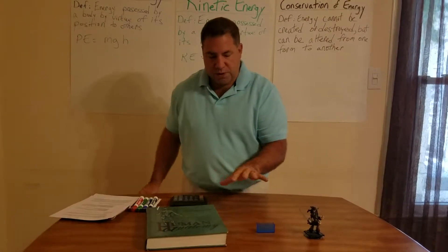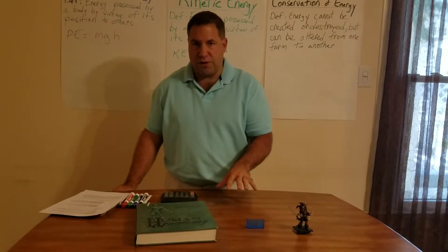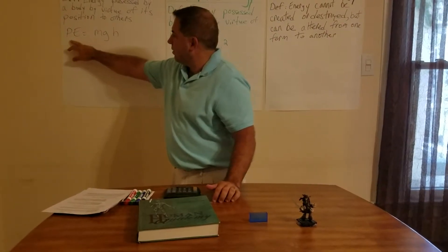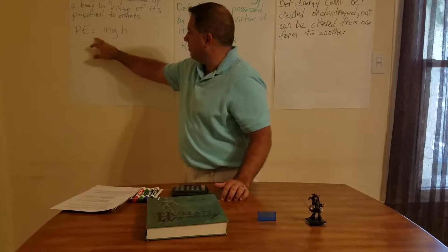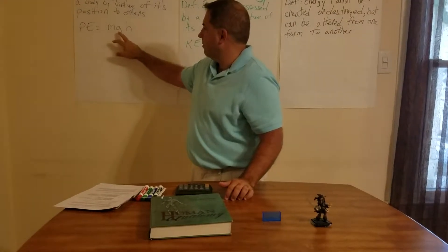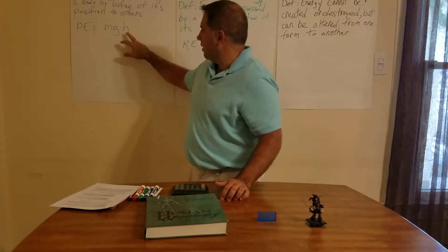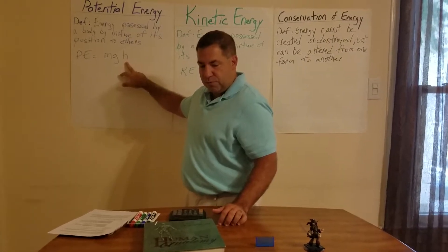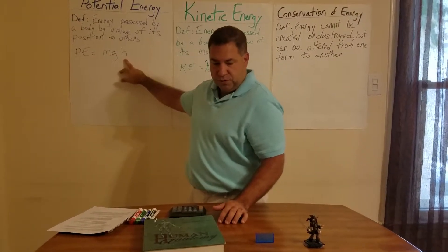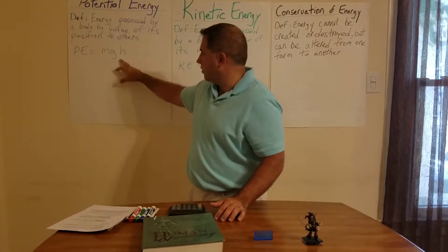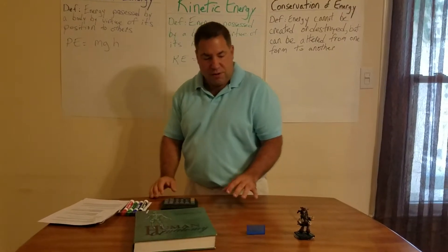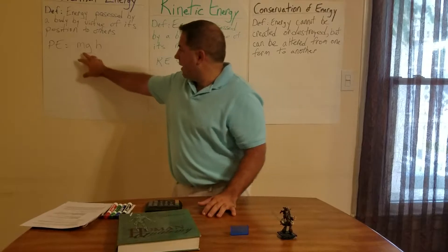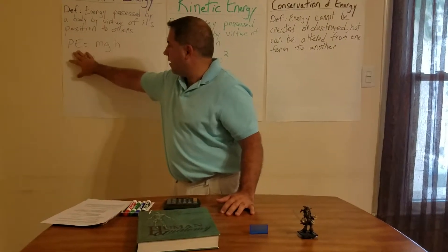I'm going to use these to show potential energy and to further explain our equation. Potential energy equals the mass of an object, the gravitational force, and the change in height — the height relative to the zero position. As you add mass and height, you add energy.